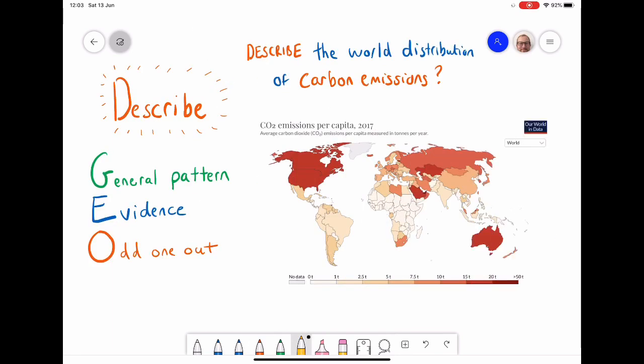Here's an example question using a source where you're being asked to describe the world distribution of carbon emissions. Stop the video and spend a minute using GEO, general pattern evidence odd one out, to see if you can describe how carbon emissions are distributed on a worldwide level, and then see the answer that I'm going to go through in a sec.